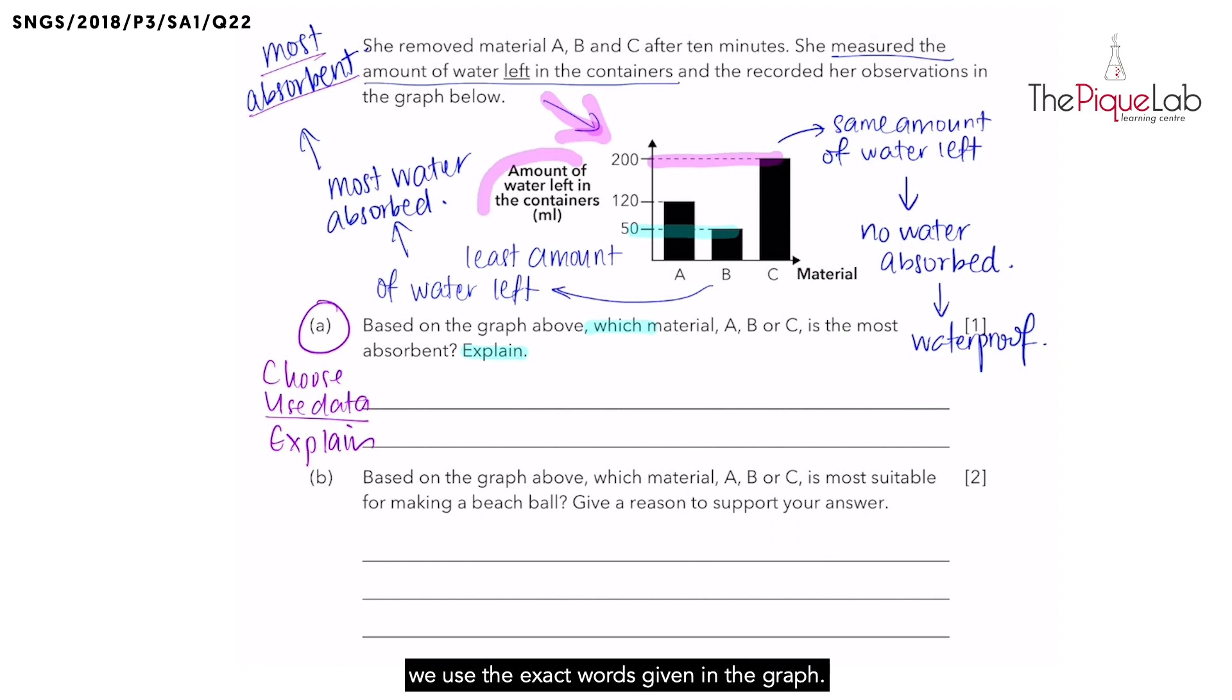we use the exact words given in the graph, which means for this question, we use the data by saying the amount of water left in the container, which had material B, is the least. And that is how you use the data.